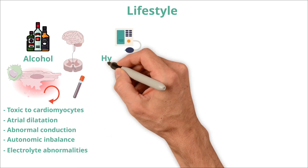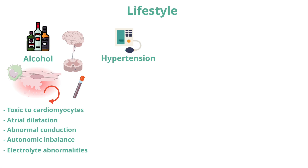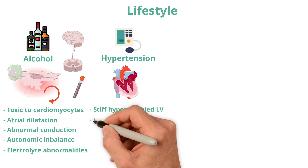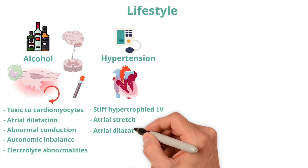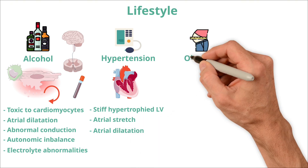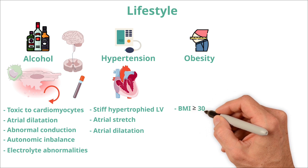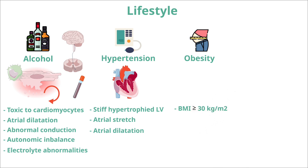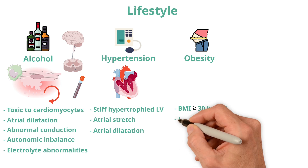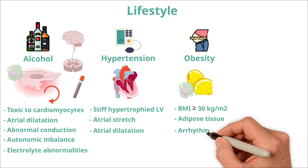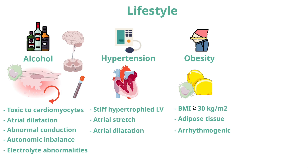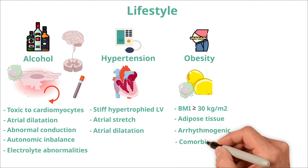Long-standing hypertension increases AF risk as it causes the ventricles to become stiff and less compliant, causing the atria to stretch due to increased pressure, leading to atrial dilatation and remodeling. Obesity, defined as a BMI of greater than or equal to 30 kg/m², increases the risk of AF — adipose tissue around the heart is pro-inflammatory and can cause arrhythmogenic changes in the atria, and obesity is also associated with hypertension and obstructive sleep apnea.